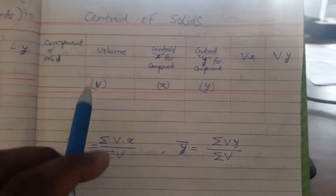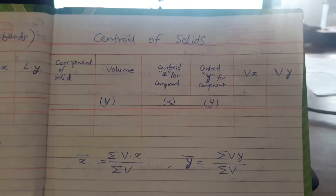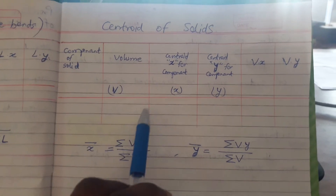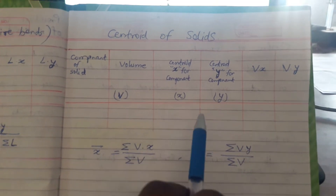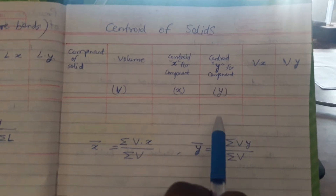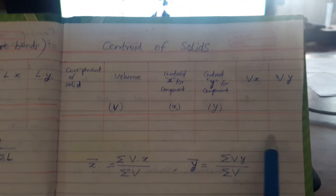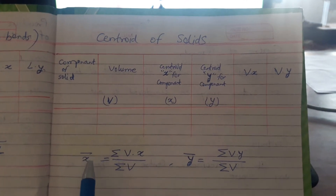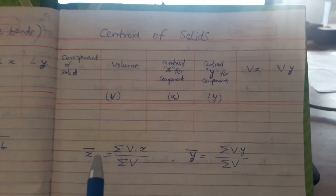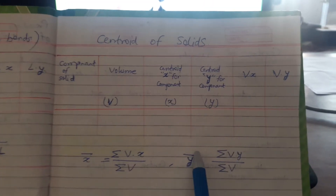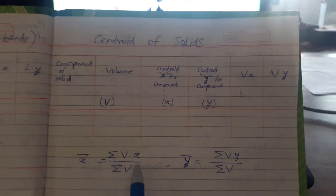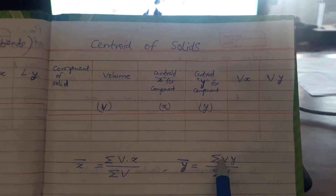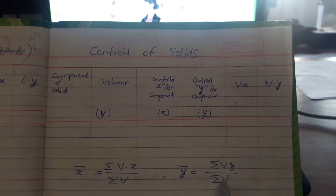To find the centroid of solid figures, we also prepare a table with columns for the component of solid, then volume, then centroid x and centroid y for that component, and then vx and vy. Our final aim is to find the centroid of the whole figure — that is, x̄ = Σvx / Σv and ȳ = Σvy / Σv.